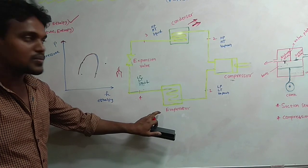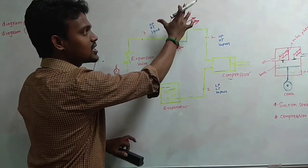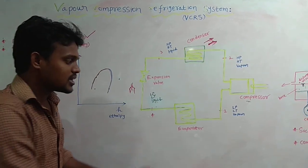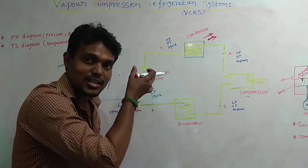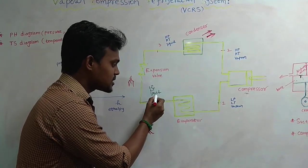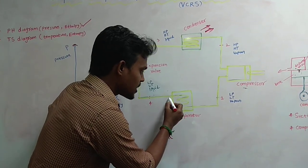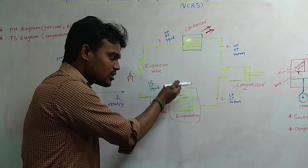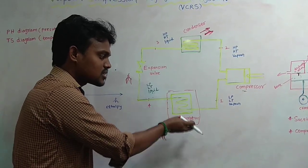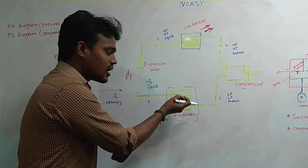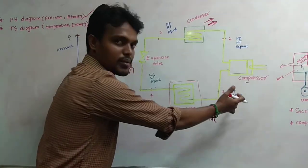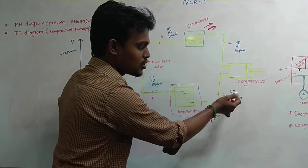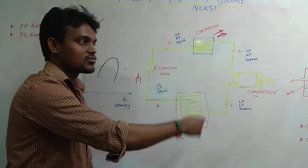This low pressure, low temperature liquid enters the evaporator. In the evaporator, heat is absorbed from the room or the chiller space using a fan. The liquid absorbs heat and changes phase to vapor, becoming low pressure, low temperature vapor. This vapor then goes back to the compressor, completing the cycle.